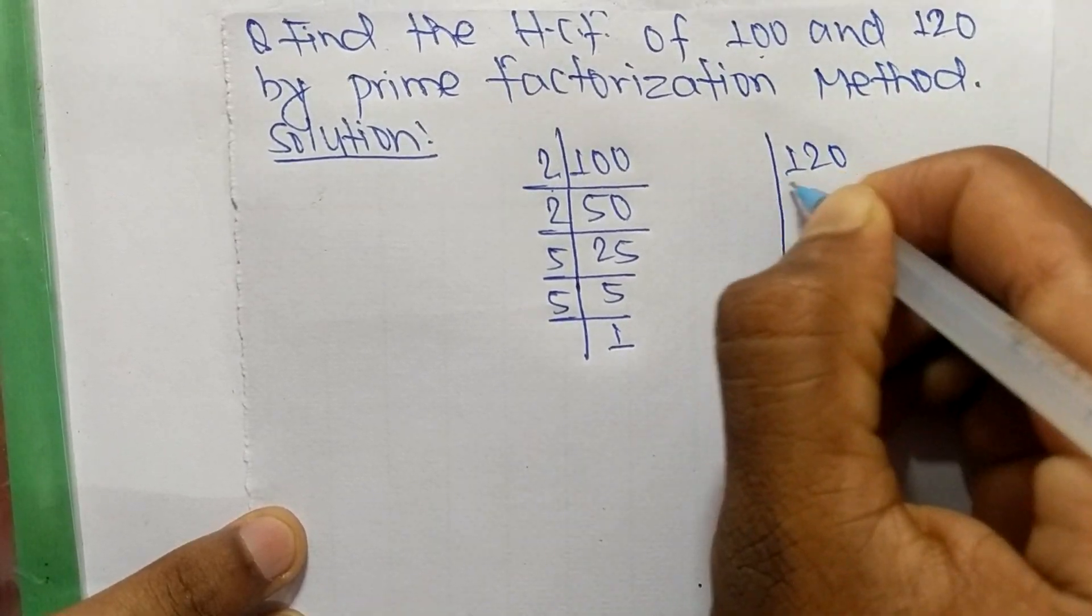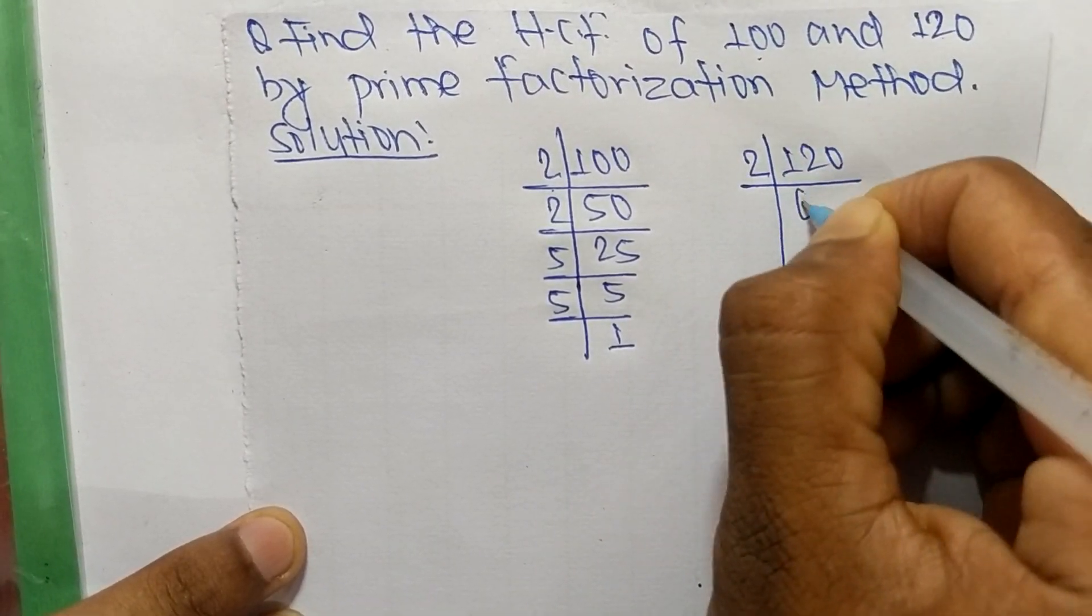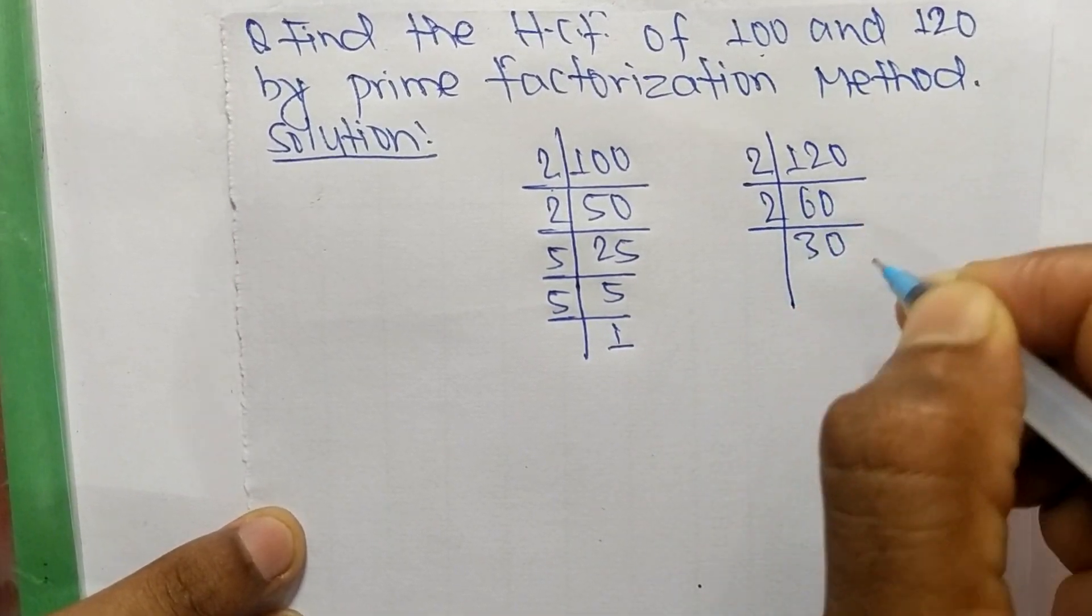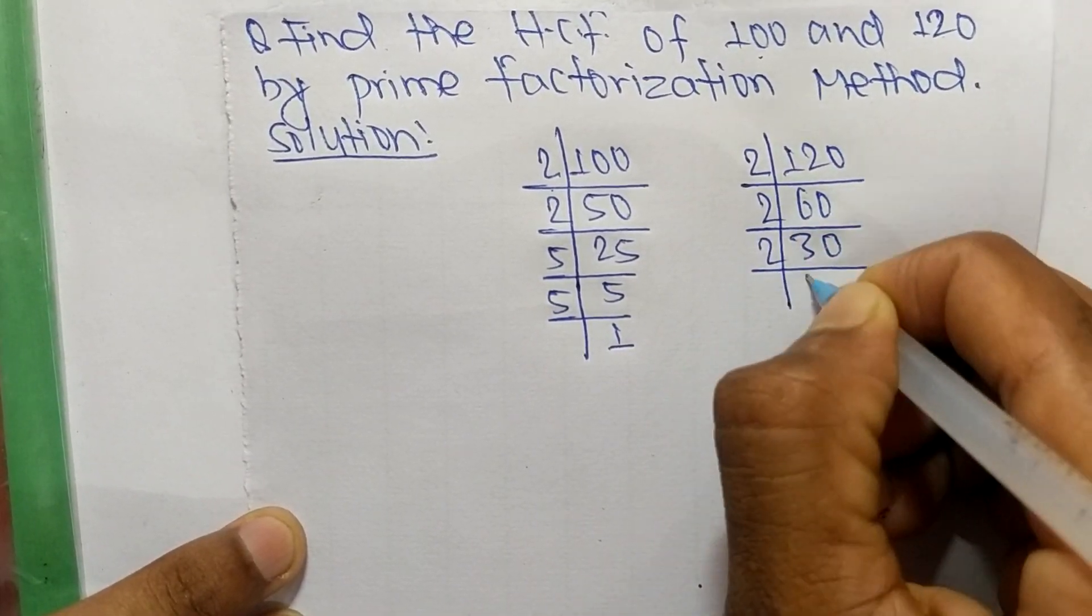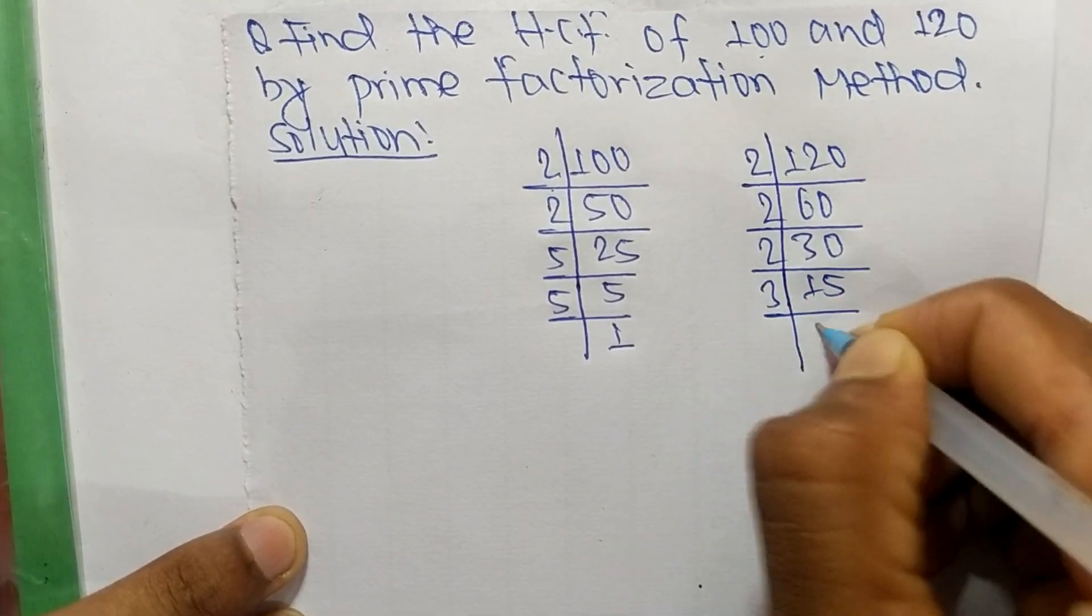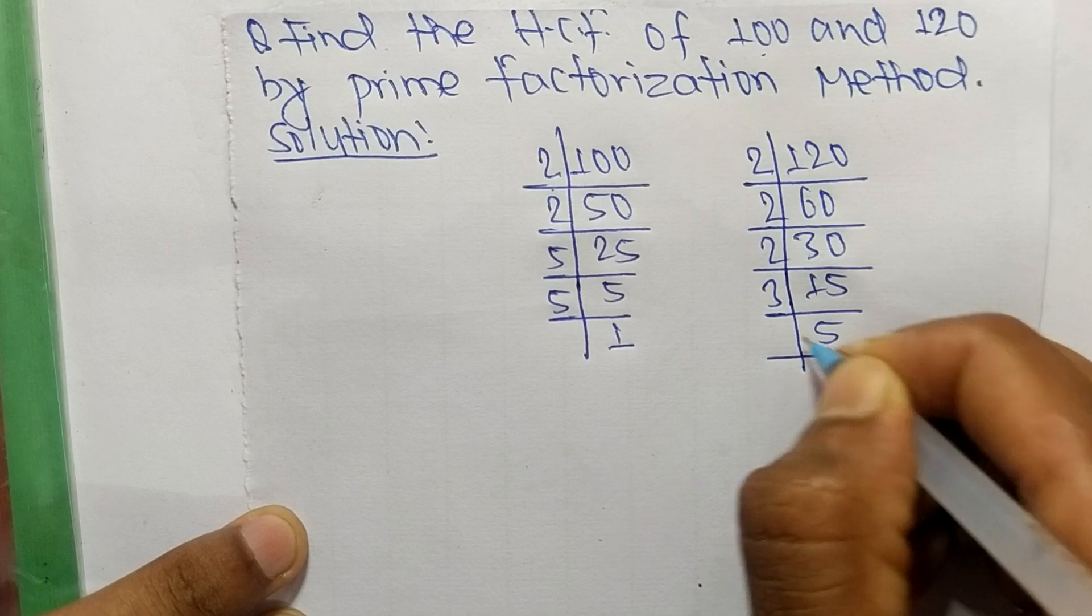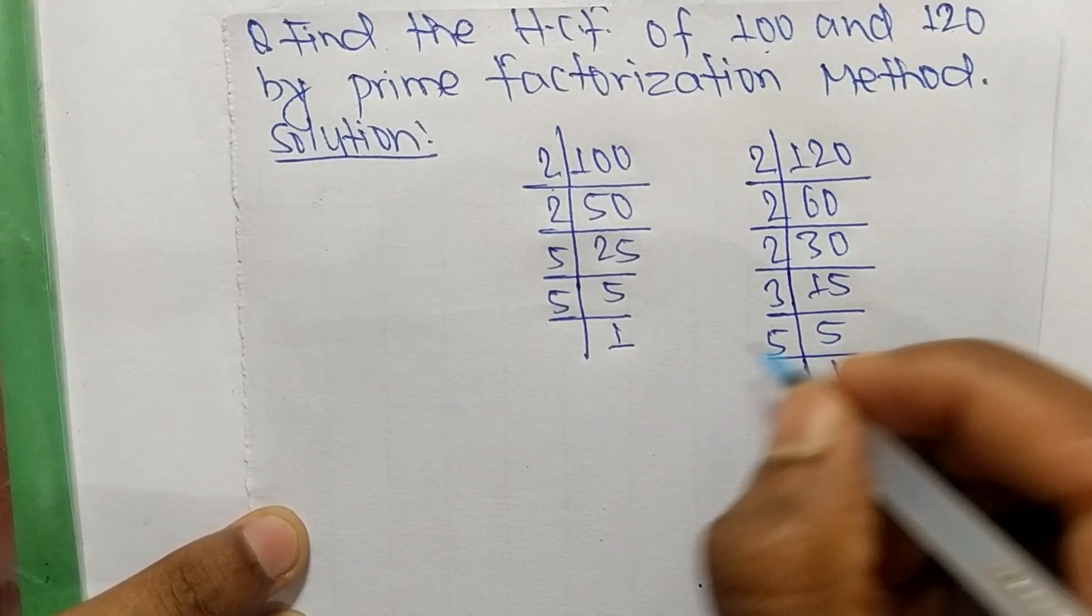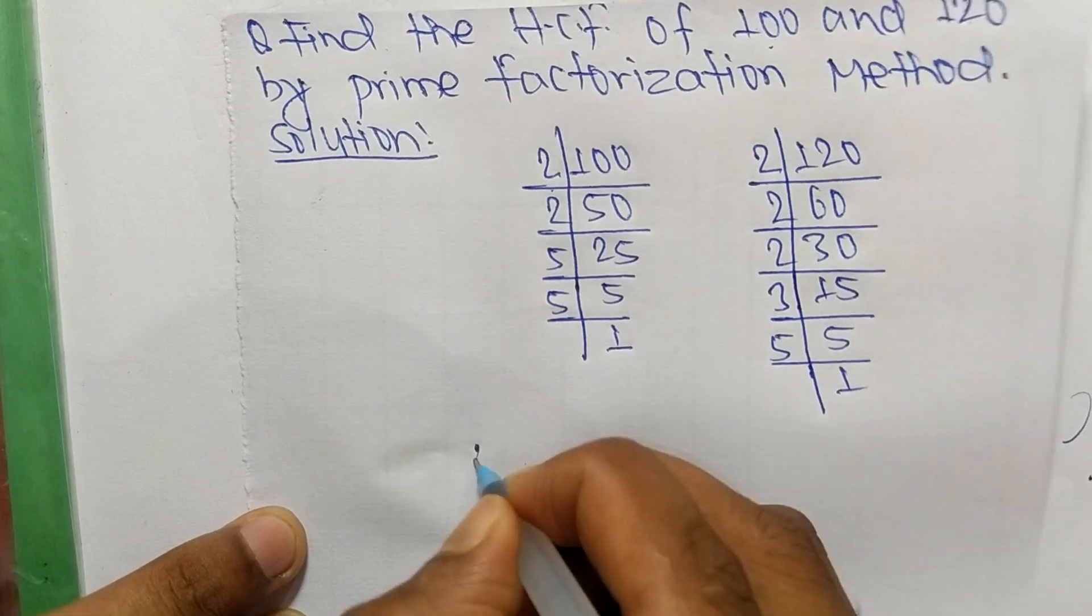So likewise the prime factors of 120 are: it is 2 times 60 equals 120, 2 times 30 equals 60, 2 times 15 equals 30, 3 times 5 equals 15, and 5 times 1 equals 5.